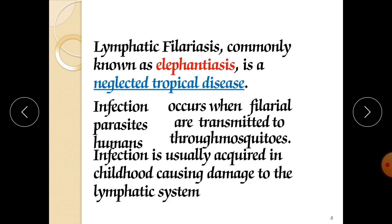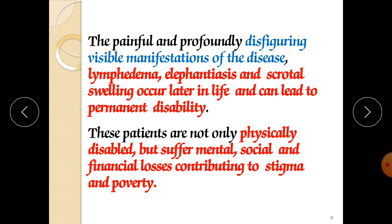Lymphatic filariasis is commonly known as elephantiasis — that's why I call it elephant-like leg. It is a neglected tropical disease. Nowadays it is very rare, but in early days it was very common. Once it occurs, it becomes a stigma to society. The infection occurs when filarial parasites are transmitted to humans through mosquitoes, and infection is usually acquired in childhood, causing damage to the lymphatic system. The painful and profoundly disfiguring visible manifestations are very bad — especially your leg becomes disfigured, looking very dangerous.